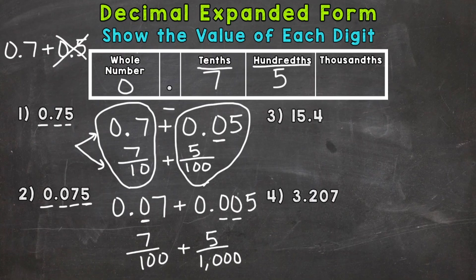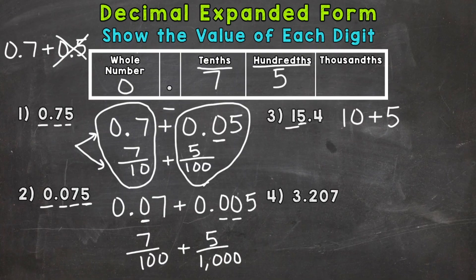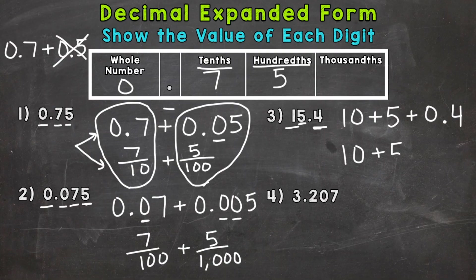On to numbers three and four, where we're going to have a whole number and a decimal. For number three, we have fifteen and four tenths. Let's put the whole number in expanded form first. Start with the greatest value digit, the digit furthest to the left, which is the one. Its value is ten. Plus this five in the ones place has a value of five. Plus four tenths. In fractional form, the whole numbers stay the exact same, and the decimal becomes four tenths.